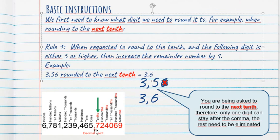I put it here. Rounded to the next tenth means that I'm asking for one decimal. When I say the nearest tenth, again, I'm asking for one decimal. Rule number one,